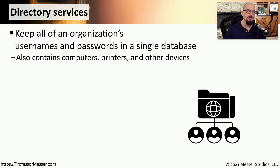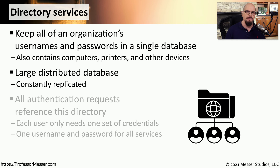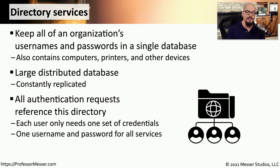Many operating systems will use a feature known as directory services. This is a central database that stores usernames, passwords, computers, printers, and other devices that might be connected to the network. This database is distributed across multiple devices, and those databases will communicate to each other and send replication data so that every database is always up to date with the latest information. This means that when a user needs to access the network, they simply use their single username and password, and those credentials are checked against this directory services database. The users only need to remember this single authentication method, and that single method generally gives you access to all of the resources you need on that network.